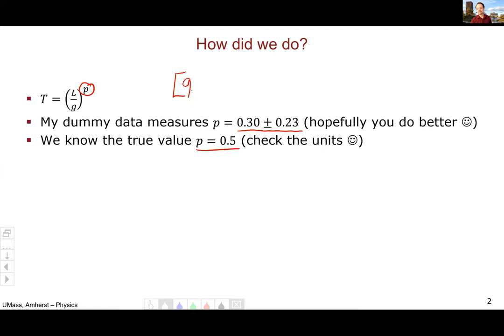If you think about the units of the gravitational field g in meters per second squared, instead of newtons per kilogram, you can easily see through unit analysis that the power has to be 0.5. This has to be a square root.